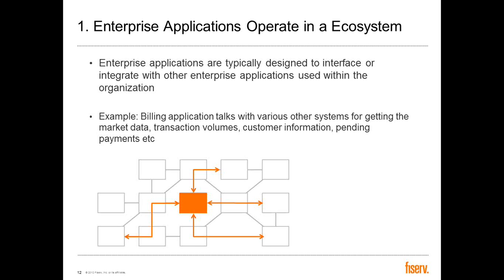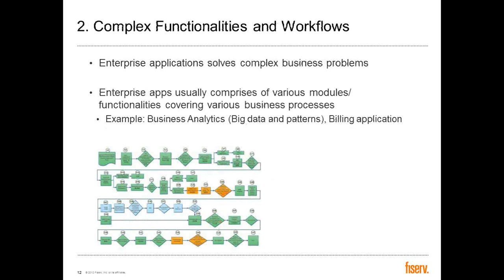Very rarely will you find an enterprise application that works in isolation. Enterprise applications always work in an ecosystem. For example, a billing application talks with various other systems to capture market data, transaction volume, customer information, pending payments, etc. This is one of the key characteristics — enterprise applications work in an ecosystem.